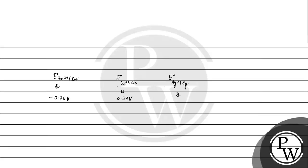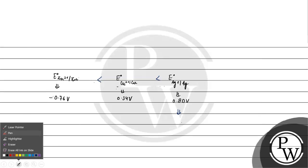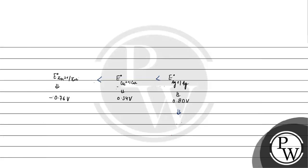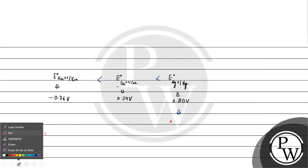So the reduction potentials in order are: Ag+ at 0.80 V, then Copper 2+ at 0.34 V, then Zinc 2+ at minus 0.76 V. Since E0 of Ag+/Ag is the highest reduction potential, Silver has the greatest tendency to get reduced. If Silver gets reduced, it will act as an oxidizing agent — it will be the best oxidizing agent.